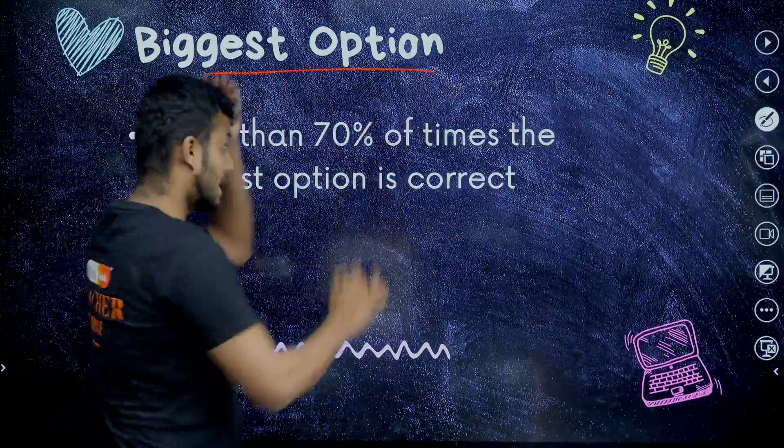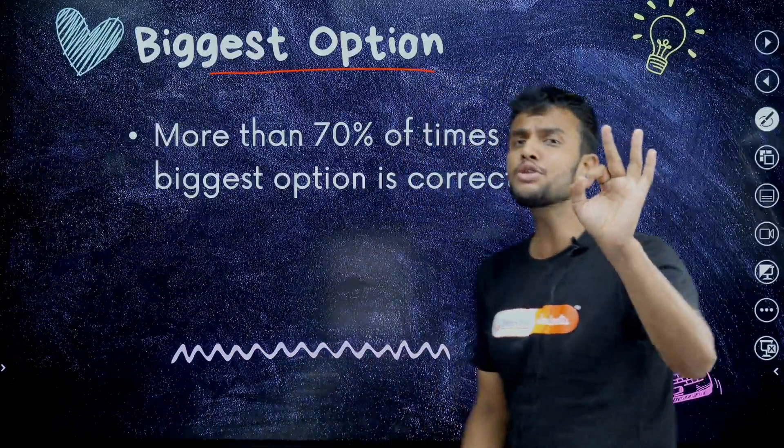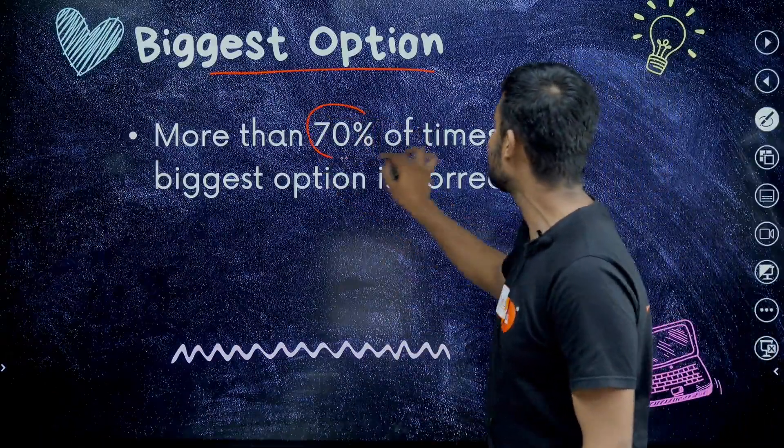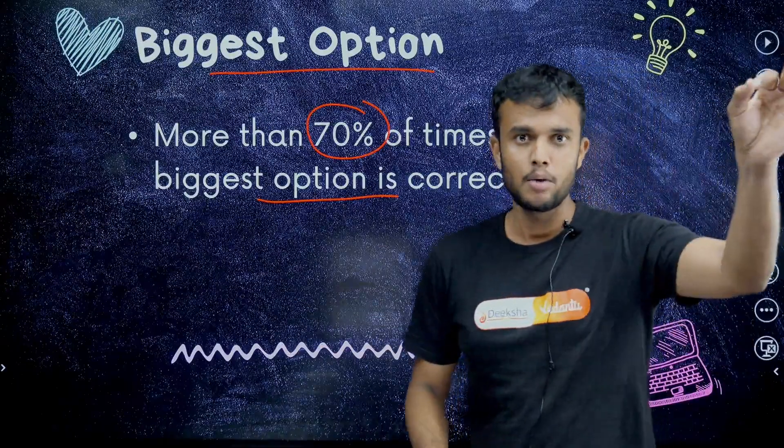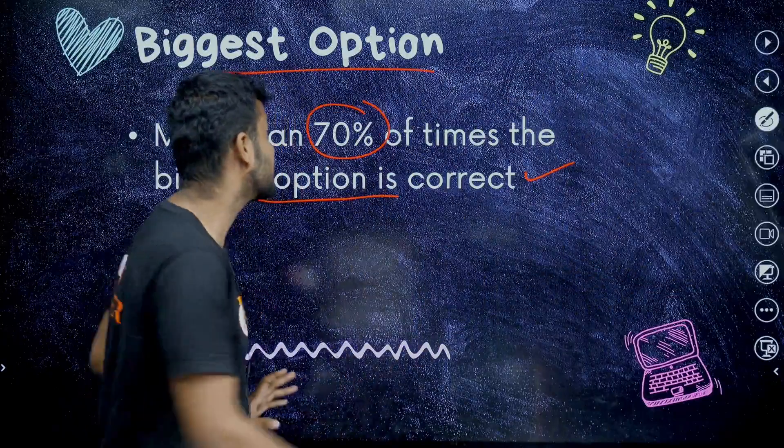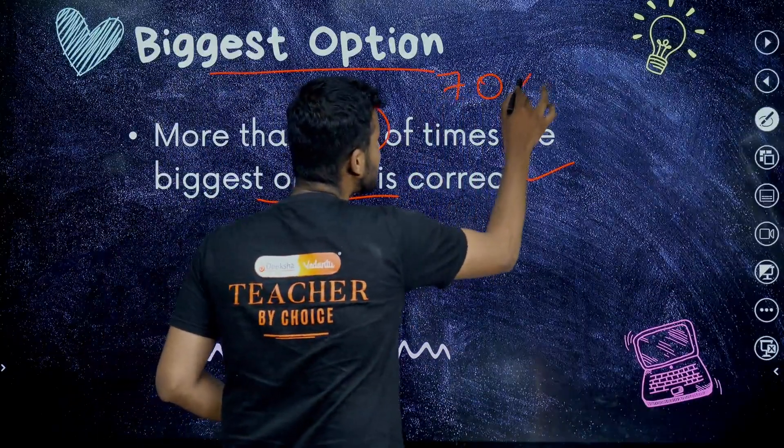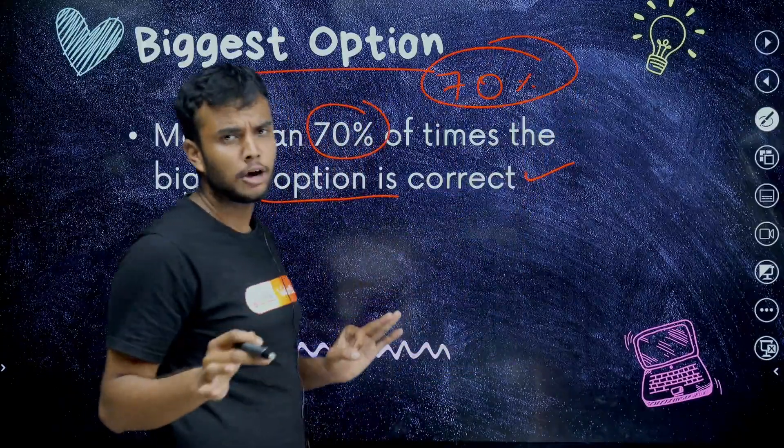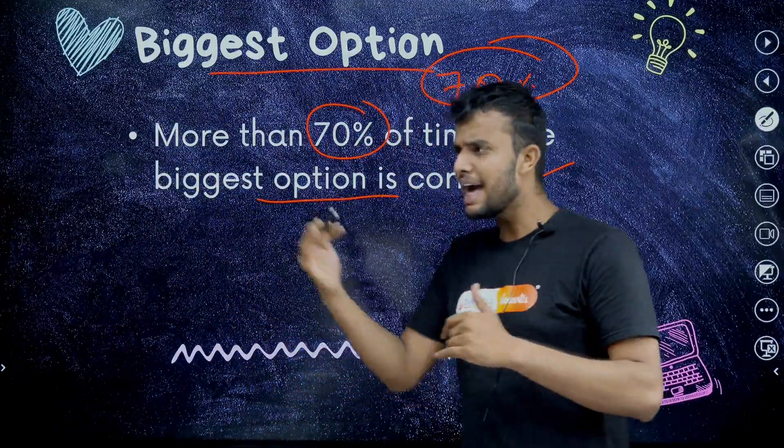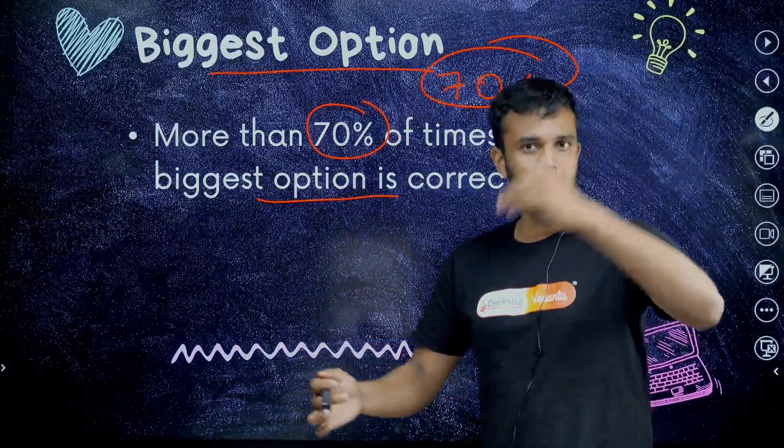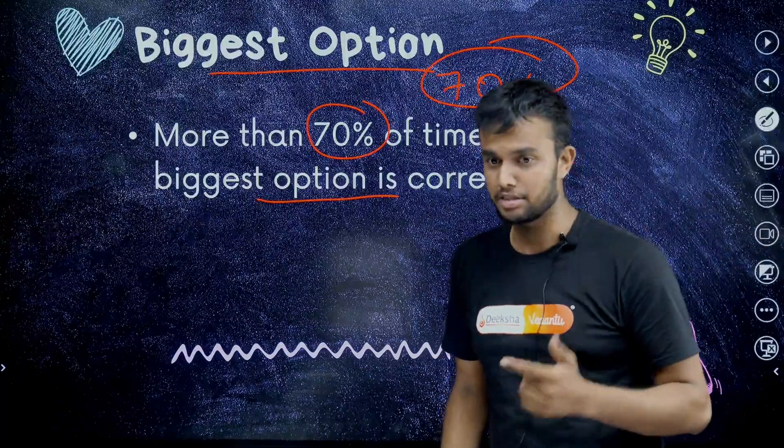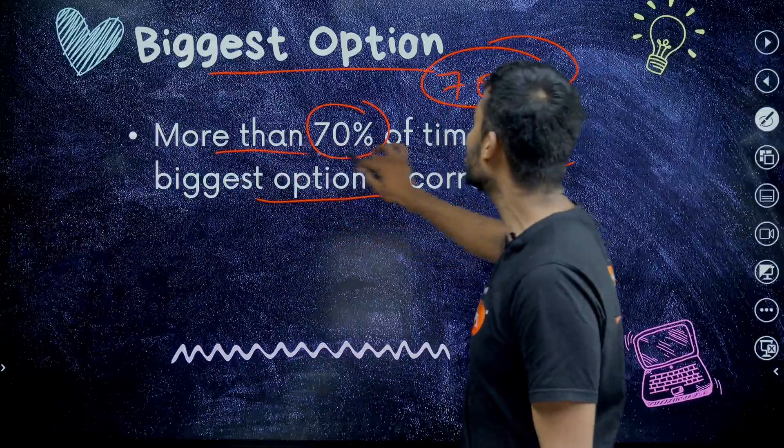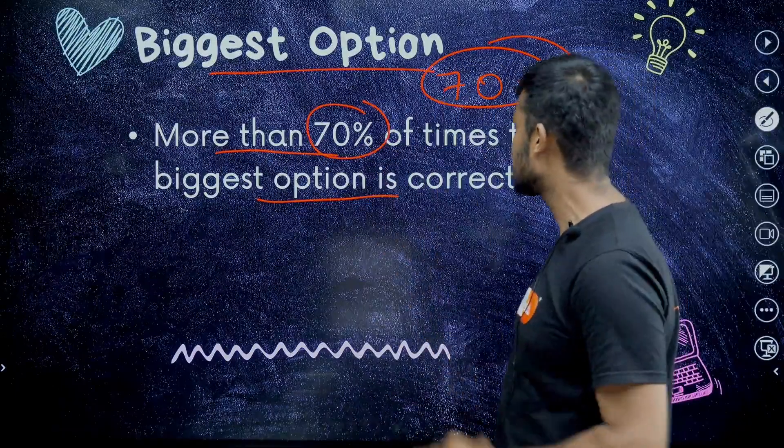It is biggest option strategy. Students, whenever you consider any questions, more than 70% of times the largest or biggest option is correct. More than 70% of time the biggest option. Students, they have some few questions only they for typing they need some extra time. Why they waste those time? That's why almost more than 70% of times the biggest option is correct.